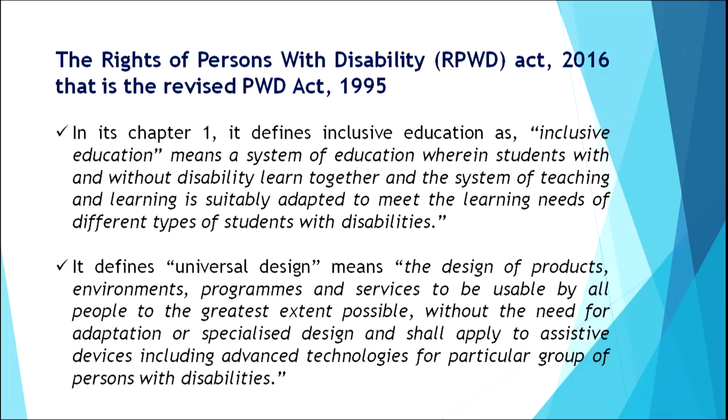The RPWD Act in Chapter 1 defines inclusive education as education wherein students with and without disability learn together, and the system of teaching and learning is suitably adapted to meet the learning needs of different types of students with disabilities. It also defines universal design as the design of products, environments, programs, and services to be usable by all people to the greatest extent possible without the need for adaptation or specialized design, and shall apply to assistive devices including advanced technologies for particular groups of persons with disabilities. Both the RPWD Act and the RTE Act emphasize that the school has to change and become an inclusive space — a universal design that accommodates all children not only in terms of physical space but also in terms of meaningful engagement and empowerment.